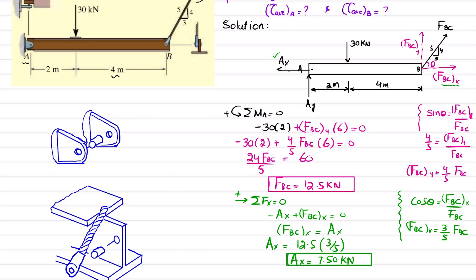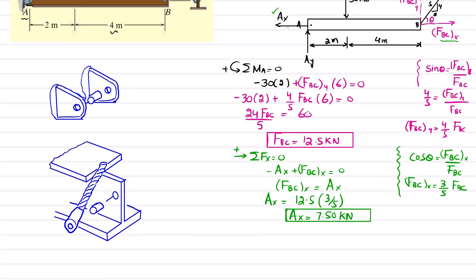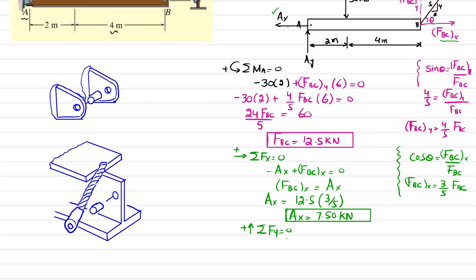The last unknown is AY, found using the sum of forces in the Y direction equals zero, with upward forces positive. Writing: AY minus 30 plus 12.5 × (4/5) equals zero. Solving this gives AY equals 20 kN.